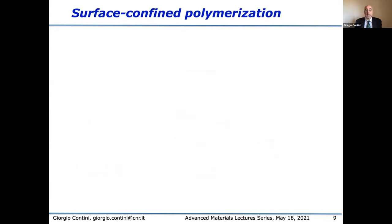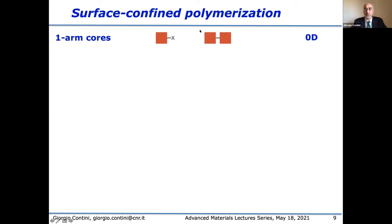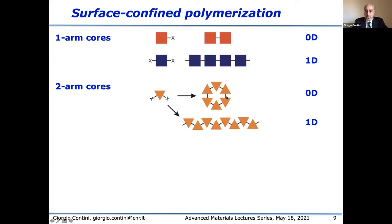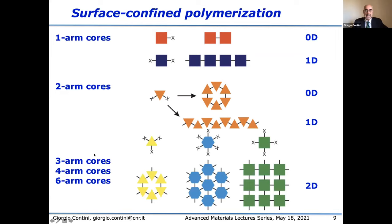How is it possible to do this? We can use the technique of surface-confined polymerization. The idea is to take some monomers and put them together to make polymers on the surface. With one-core monomers we obtain zero-dimensional structures; with two-arm cores in para-position we get one-dimensional structures. By changing the symmetry we can obtain different dimensionalities. In order to obtain two-dimensional polymers, we need at least three-arm core monomers, and as a function of the number of arms we can achieve different symmetries in the final structure.